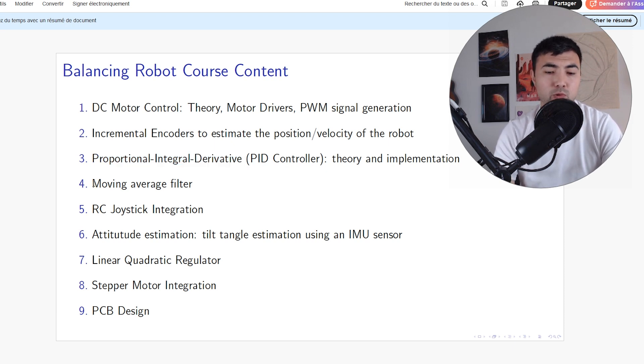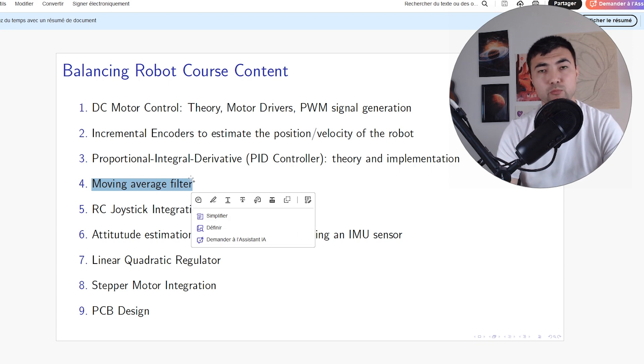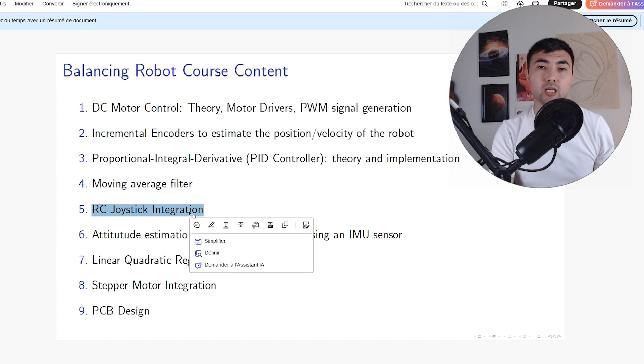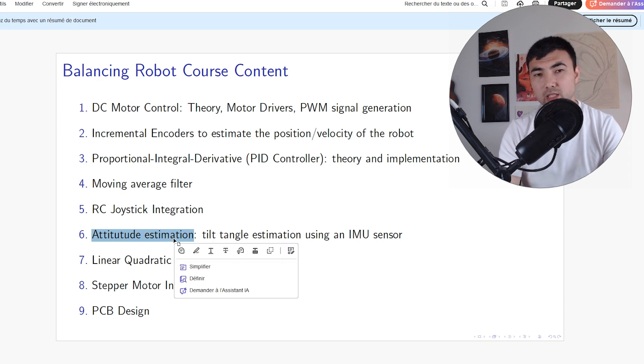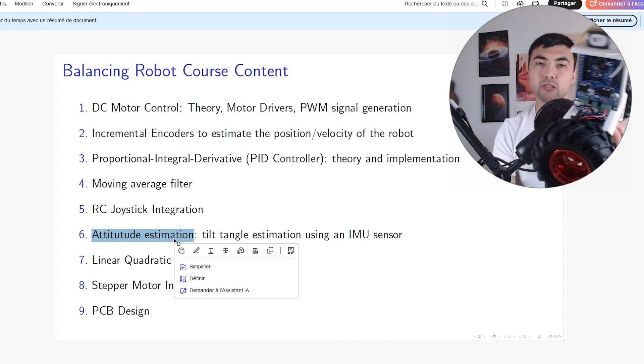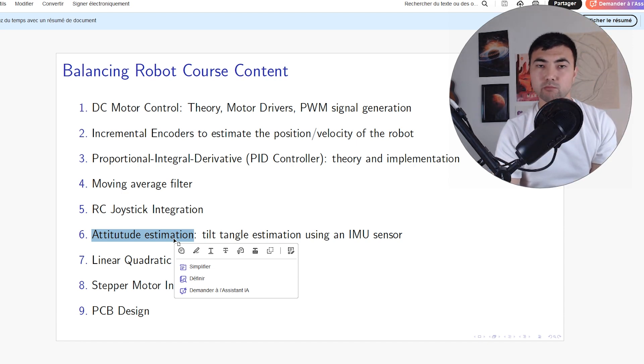Then we have the moving average filter, another important thing. Then we have RC joystick integration so we can control our robot remotely. Then we have attitude estimation—we will communicate with the IMU sensor and use different filtering to find out the tilt angle. That's a really interesting and important topic.